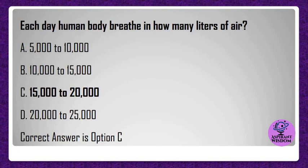Each day the human body breathes in how many liters of air? A) 5,000 to 10,000, B) 10,000 to 15,000, C) 15,000 to 20,000, D) 20,000 to 25,000. Correct answer is option C.